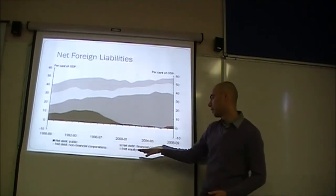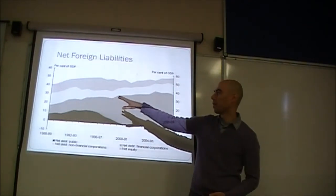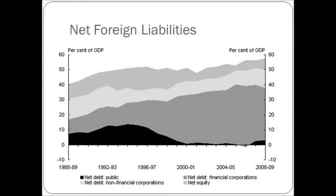Net foreign equity is at the top of the graph and was actually a large proportion of net foreign liabilities traditionally. Australia historically invited foreign companies — like Ford or Toyota — to set up shop, provide capital and know-how, manufacture goods domestically to avoid high tariff barriers, and sell within Australia. There were also capital controls on debt, making it hard to borrow money domestically, so there wasn't as much need for foreign debt.